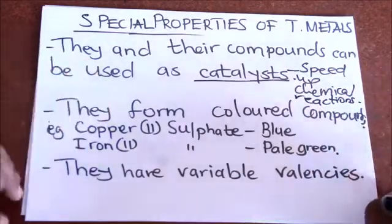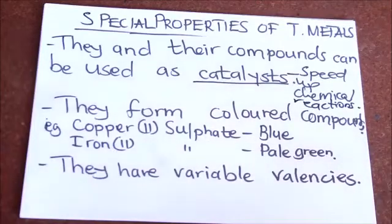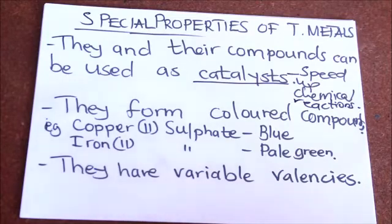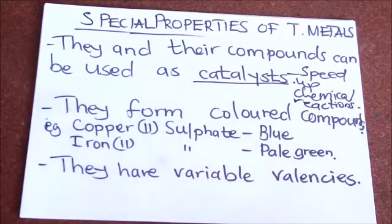Another important property is that transition metals form colored compounds. For example, copper forms compounds which are blue in color, and iron(II) sulfate is usually pale green.